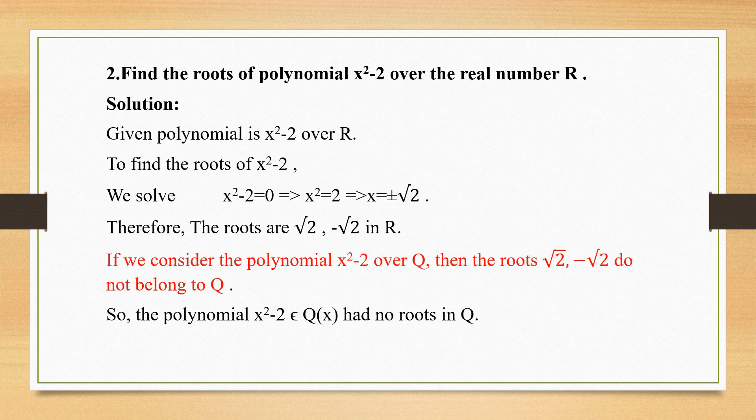Second problem: find the roots of the polynomial x² - 2 over the real numbers ℝ. There is no restriction or modulo set mentioned here, so it is a simple problem. I equate x² - 2 = 0, so x² = 2, which gives x = ±√2. Therefore, the roots are √2 and -√2 in ℝ.